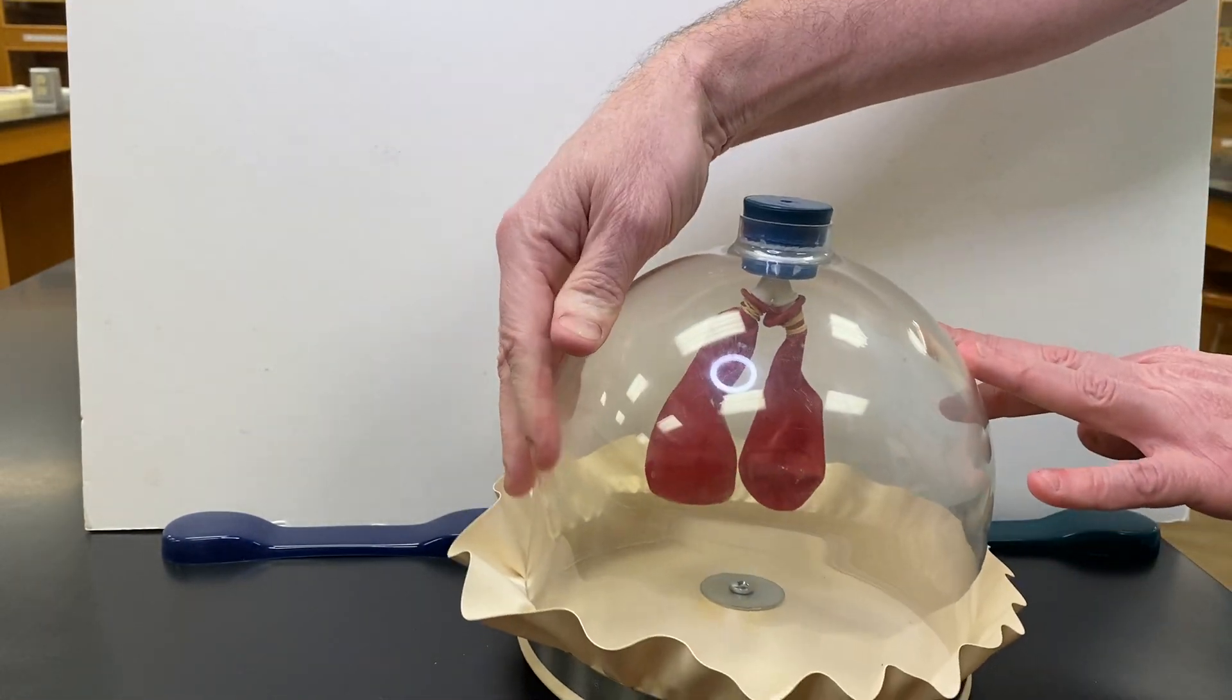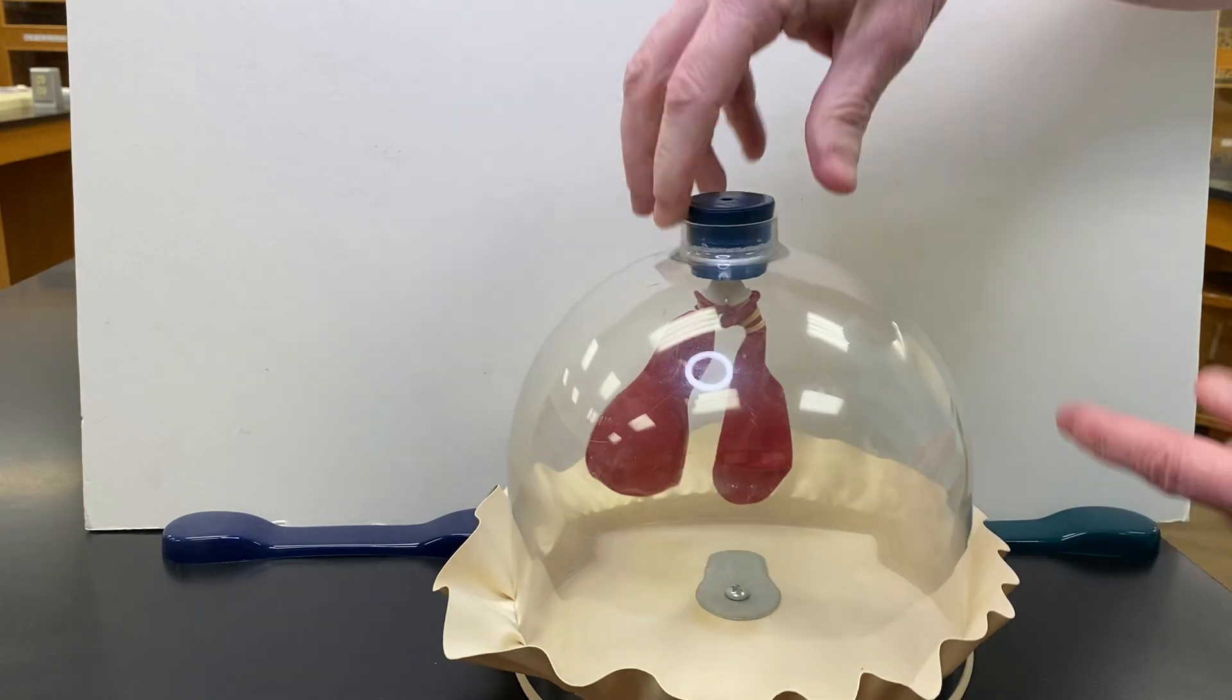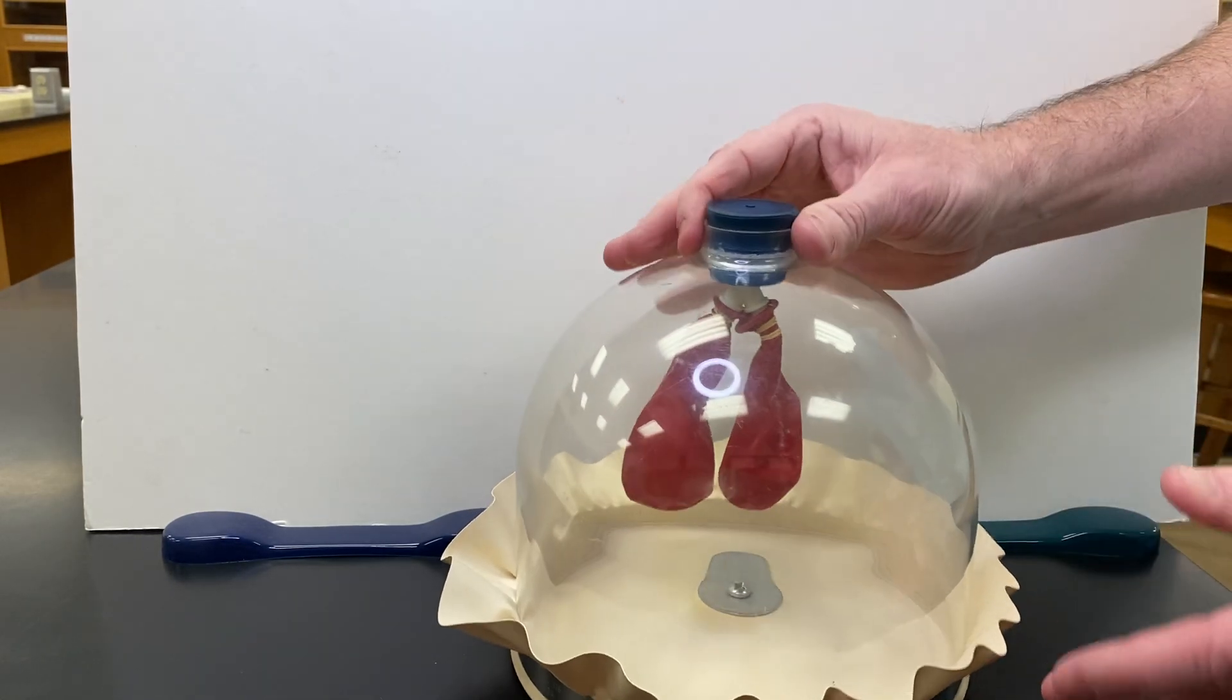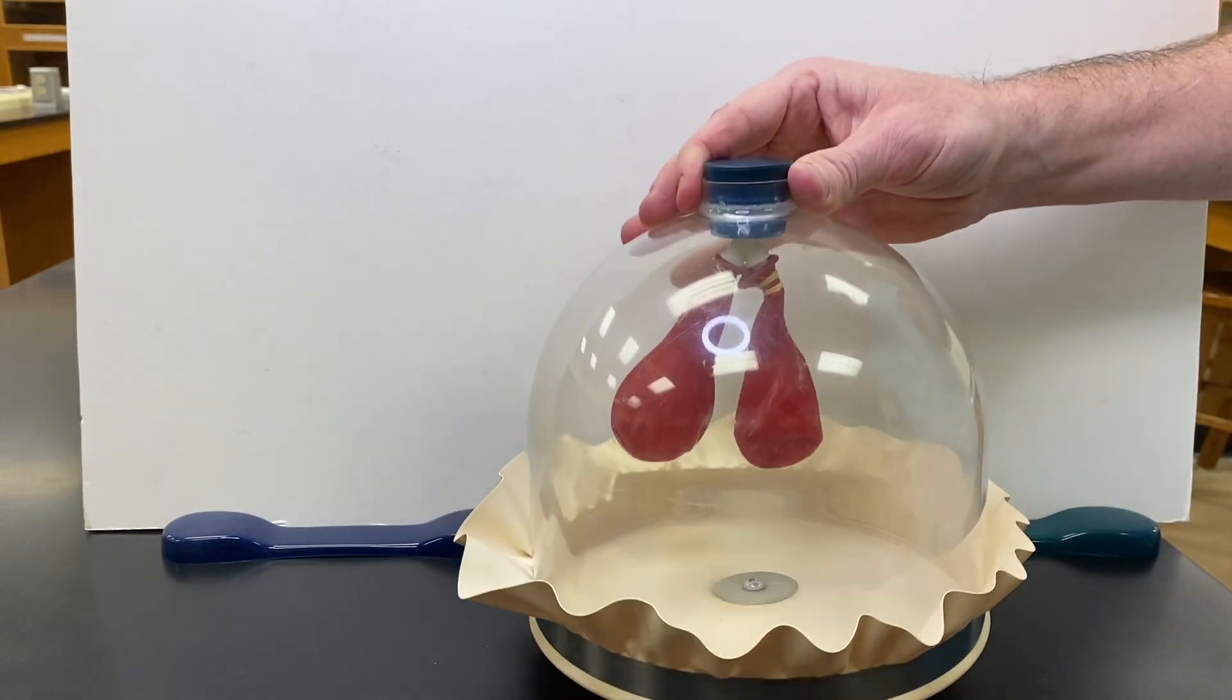So, thoracic cage, tracheal opening, balloons are our lungs. The space in between is the pleural cavity, and this rubber sheet represents the diaphragm.